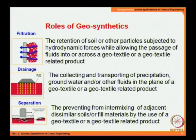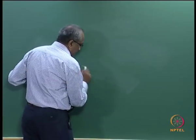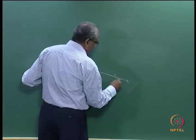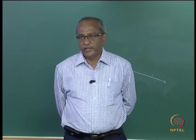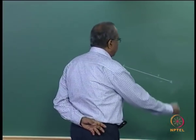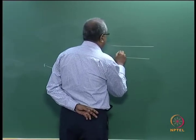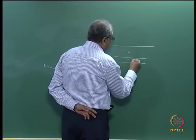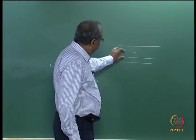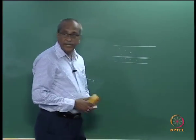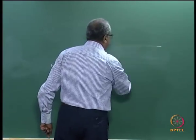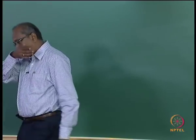Separation is the prevention of intermixing of adjacent dissimilar soils or fill materials by use of a geotextile. You can have a geotextile between two different materials to avoid mixing them up — for example, between pebbles and sand — so the geotextile functions as a separator.